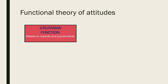The utilitarian or adaptive function relates to rewards and punishments. The attitude serves as a means to reach a desired goal or to avoid an undesired one. Utilitarian attitudes are aroused by the activation of a need associated with an attitude object and arouse favourable or unfavourable feelings.